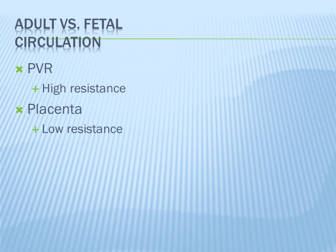All fetal blood flow dumps into the placenta, which has very low resistance. So on the right side of the heart, pressures are really high due to pulmonary vasoconstriction and high PVR, but on the left side pressures are very low because blood dumps into the low-resistance placenta. The placenta actually holds 50% of the fetus's blood volume. In an adult, it's reversed: high systemic vascular resistance and low pulmonary vascular resistance. That's what people mean when they say fetal circulation pressures are switched from adult.